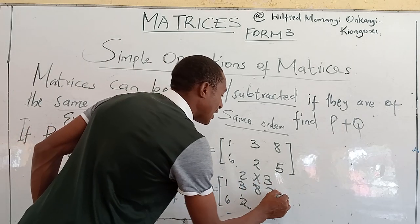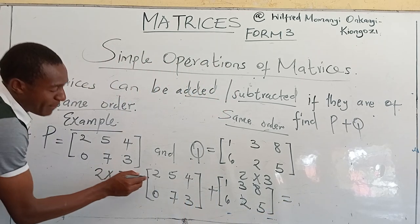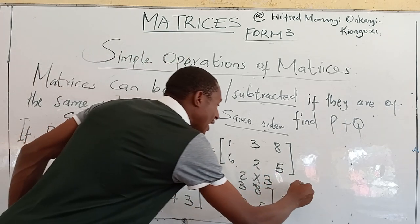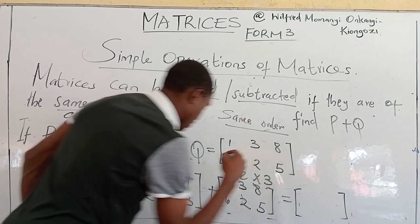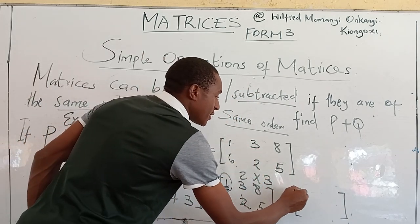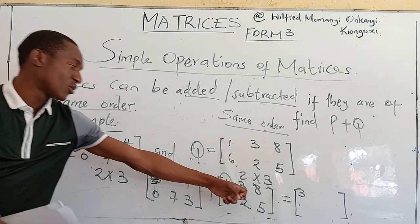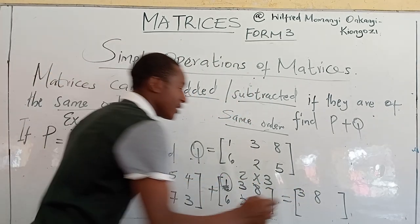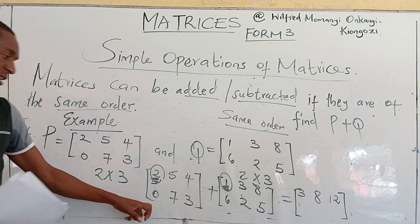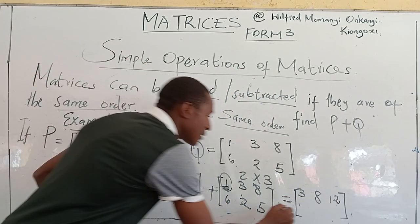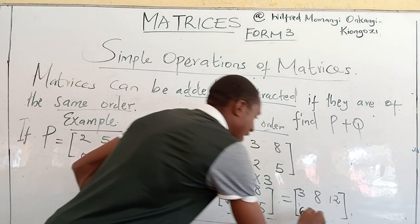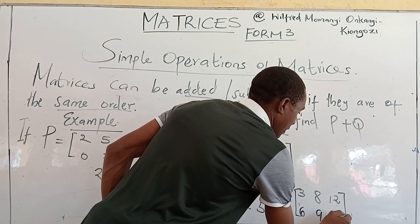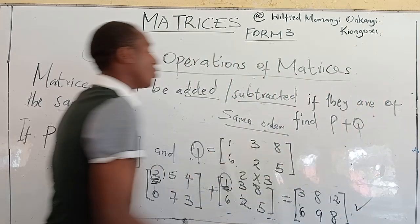I hope you remember what we said in our first video about elements. Element 2 in the first matrix corresponds with element 1, so you add them and come up with the answer at that position. So this is 2 plus 1 which is 3; 5 plus 3 is 8; 4 plus 8 is 12. Then the second row: 0 plus 6 is 6; 7 plus 2 is 9; and finally 3 plus 5 is 8. So this is the result of adding these two matrices.